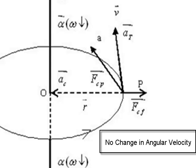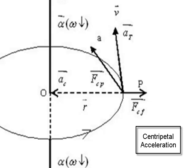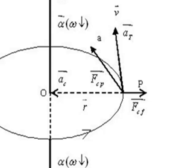For a body in UCM, there is no change in omega or angular velocity. Hence, there is no angular acceleration and no tangential acceleration. But as the velocity is changing in direction, there is always a centripetal acceleration.